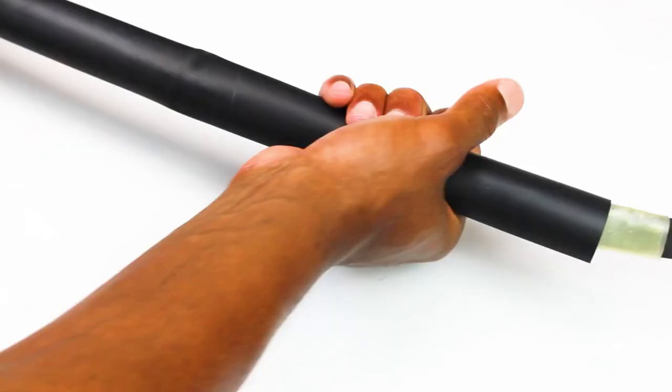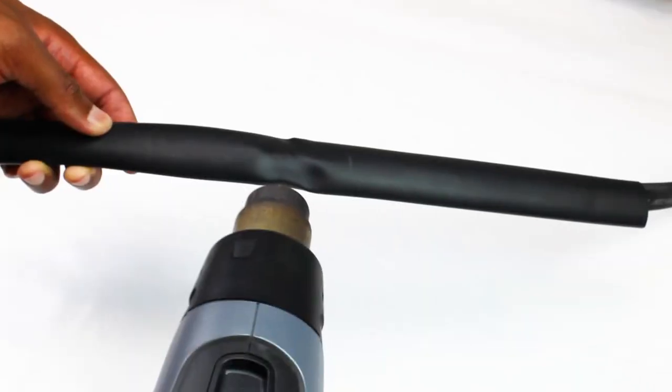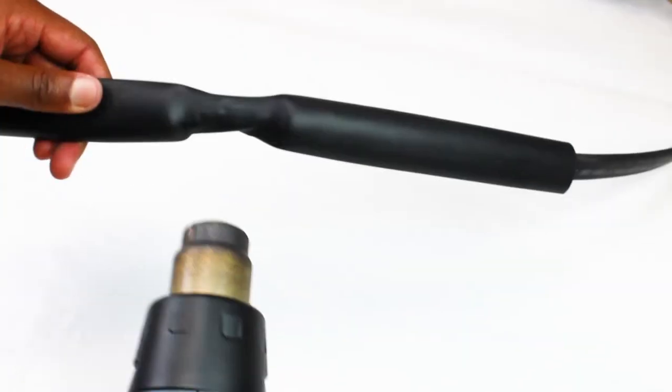Make sure the shrinking tube is centered. Heat up the tube slowly from the middle to the end.